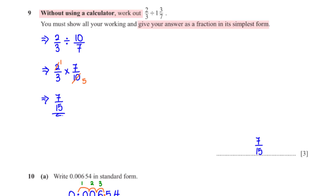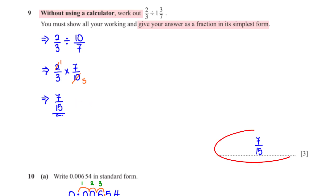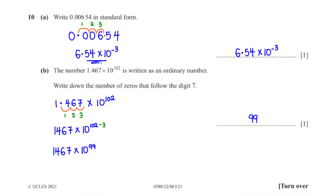Without using a calculator, work out 2 over 3 divided by 1 and 3 over 7, giving your answer as a fraction in its simplest form. First, convert 1 and 3 over 7 to the improper fraction 10 over 7. Now we have 2 over 3 times 7 over 10. Cancelling, 2 goes into 10 five times, giving 7 over 15.